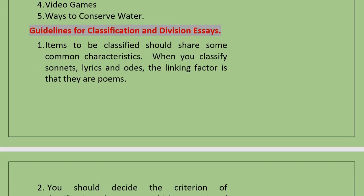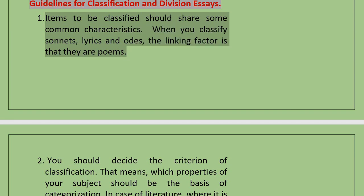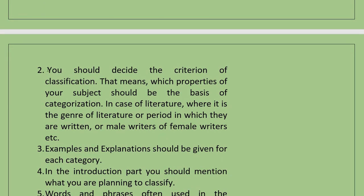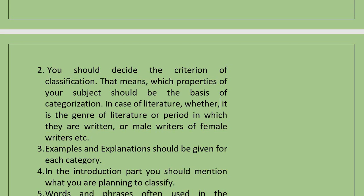Certain guidelines for Classification and Division essays: Items to be classified should share some common characteristics. For example, when you classify sonnets, lyrics, and odes, the linking factor is that they are all poems. You should also decide the criterion of classification — that means which properties of your subject should be the basis of categorization. In the case of literature, it could be the genre, the period in which they are written, or whether they are by male or female writers.